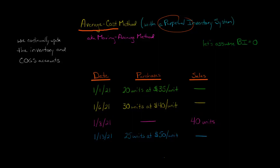Because this company is using a perpetual inventory system, every time there's a purchase we're going to adjust the inventory account — we're going to increase it every time there's an inventory purchase. When inventory is sold on January 8th, we're going to debit cost of goods sold and decrease inventory to recognize the fact that we've gotten rid of some inventory.